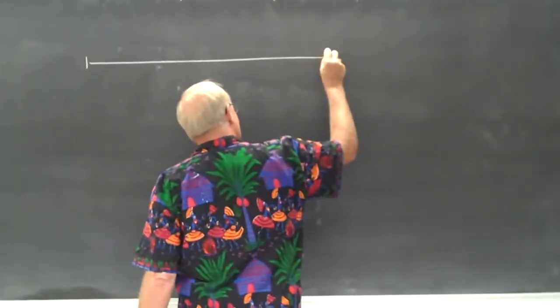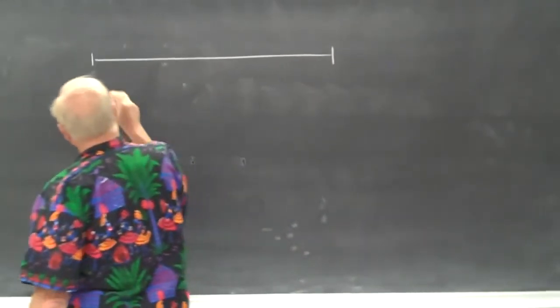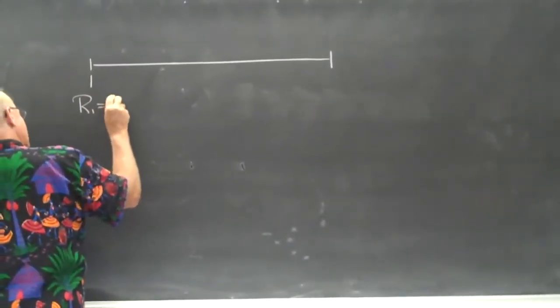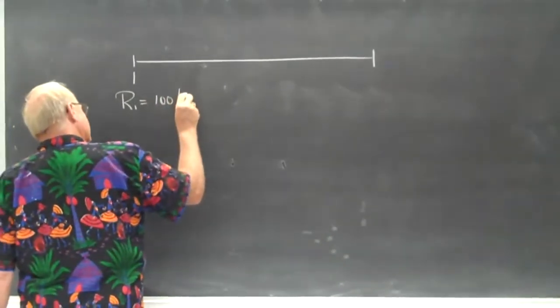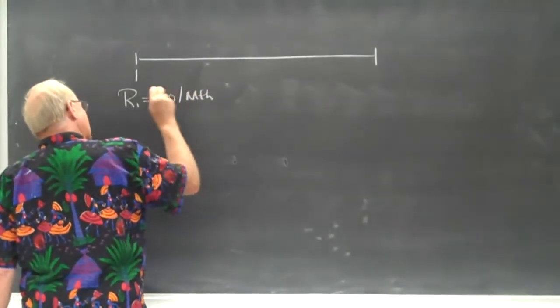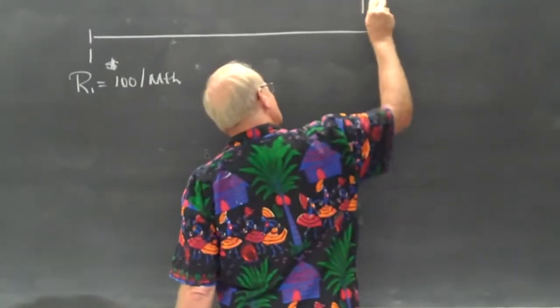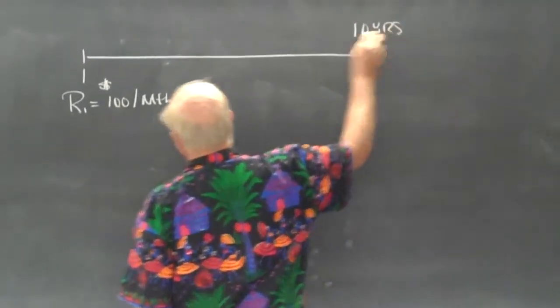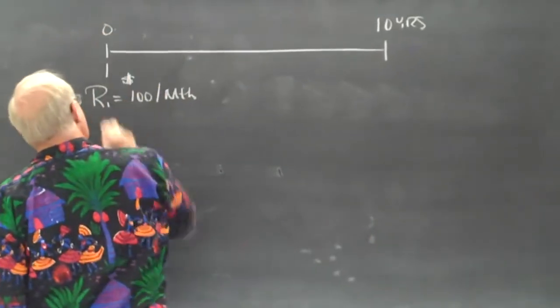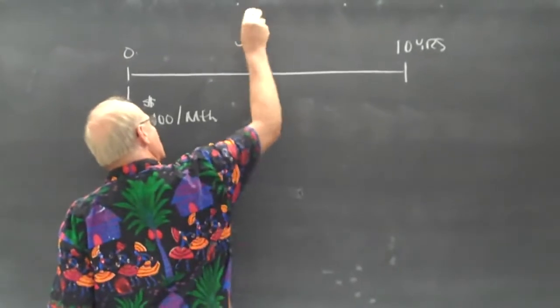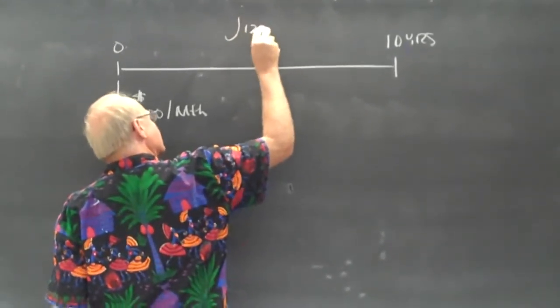So we'll start always with a timeline. So we'll draw a timeline. And this person is going to put aside at the beginning of the month $100 per month. And let's have them do this for 10 years. This is now. And let's go with the simple case. So we'll have J12 is, let's say, 6%.